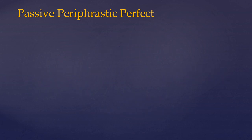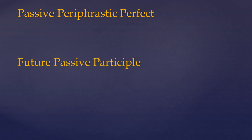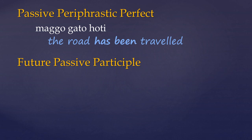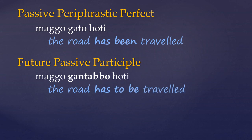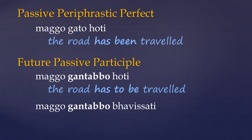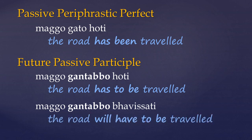Similar to the past passive participle is what's called the future passive participle. So if we take the example 'the road has been travelled', we can form the same sentence but with a future passive participle. These participles have quite a wide range of meanings, from 'capable of', to 'should be' or 'ought to be done'. These two are often used in periphrasis with forms of 'hoti' and 'bhavati'. So in the present, we would get 'the road has to be travelled', but you may also find them with a future inflected auxiliary verb, in which case this would be rendered 'the road will have to be travelled'.